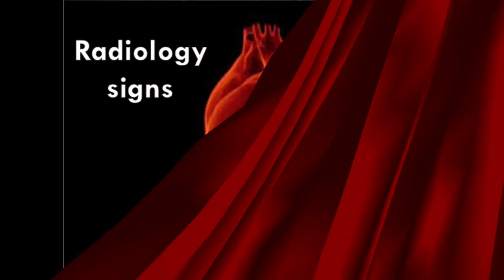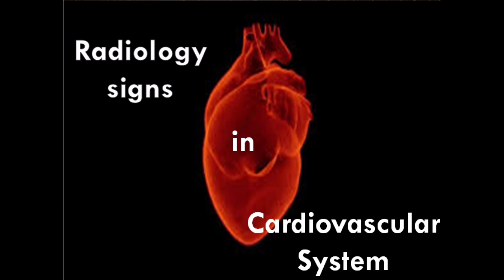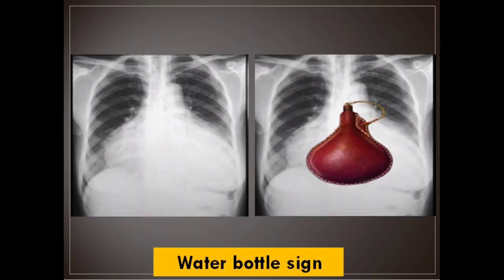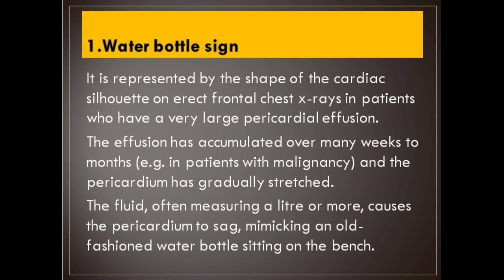Hello everybody, today we will talk about 15 classic radiological signs in cardiovascular system. Number 1: Water bottle sign. It is represented by the shape of the cardiac silhouette on erect frontal chest x-rays in patients who have a very large pericardial effusion.